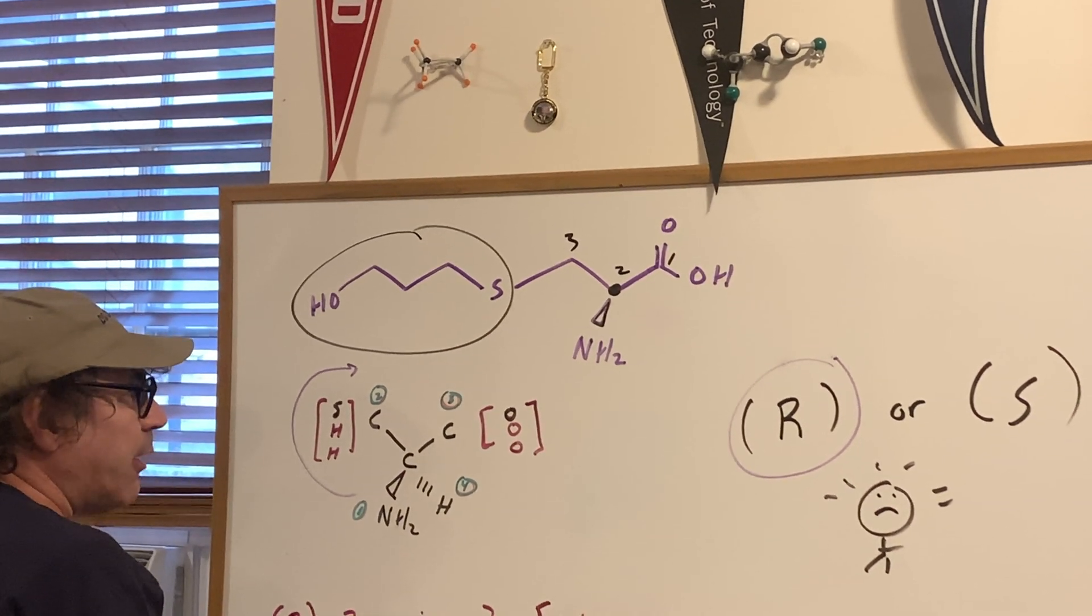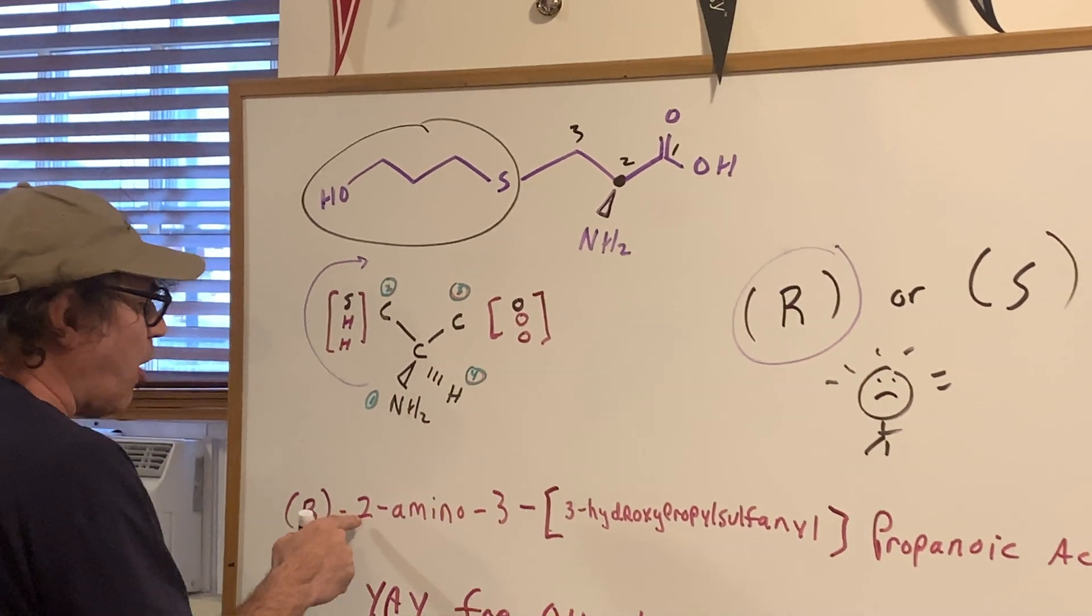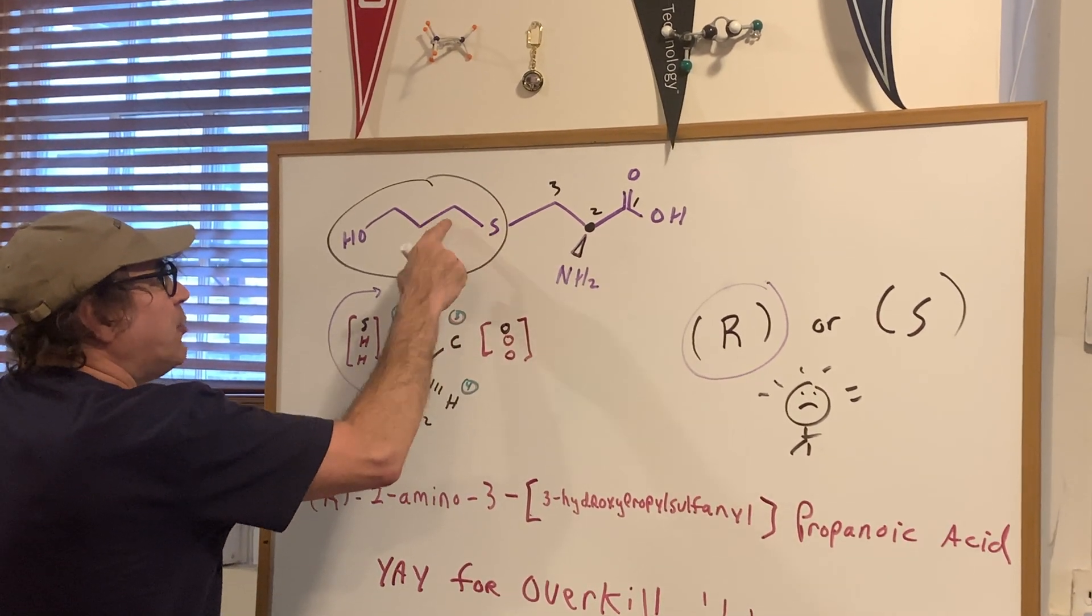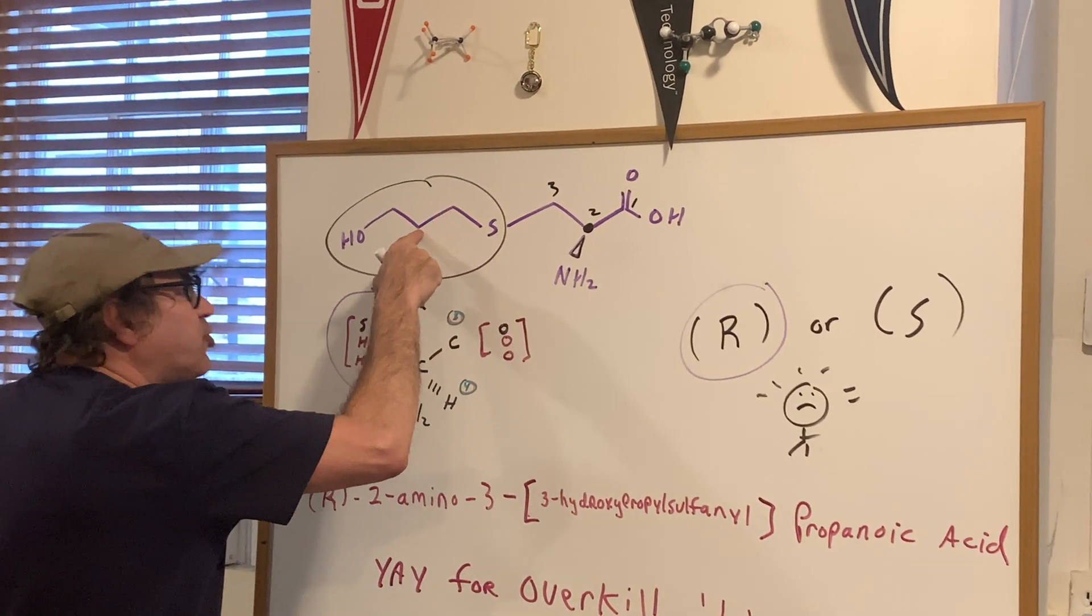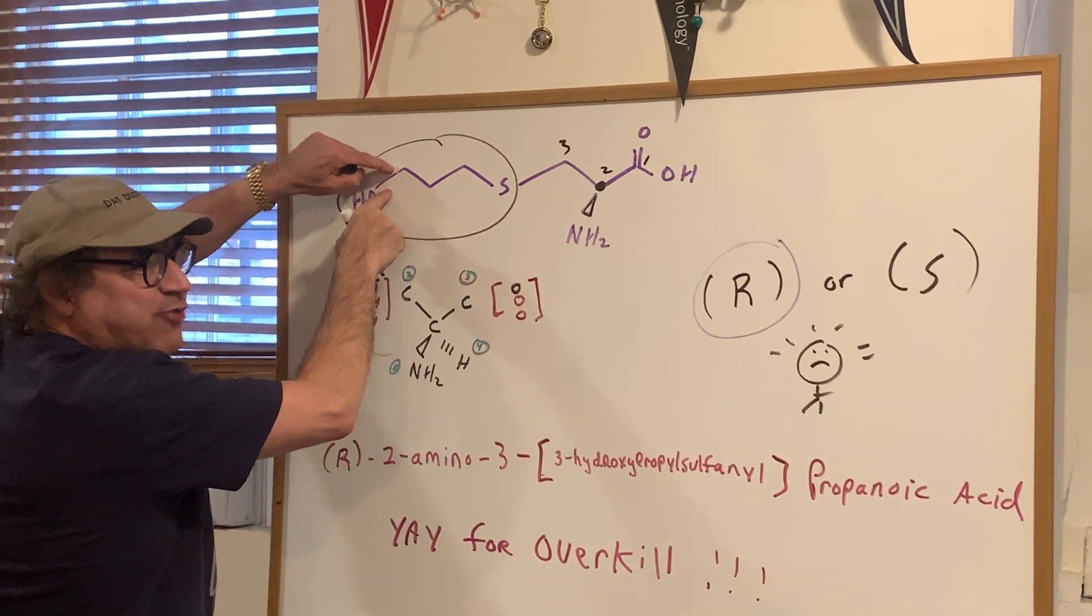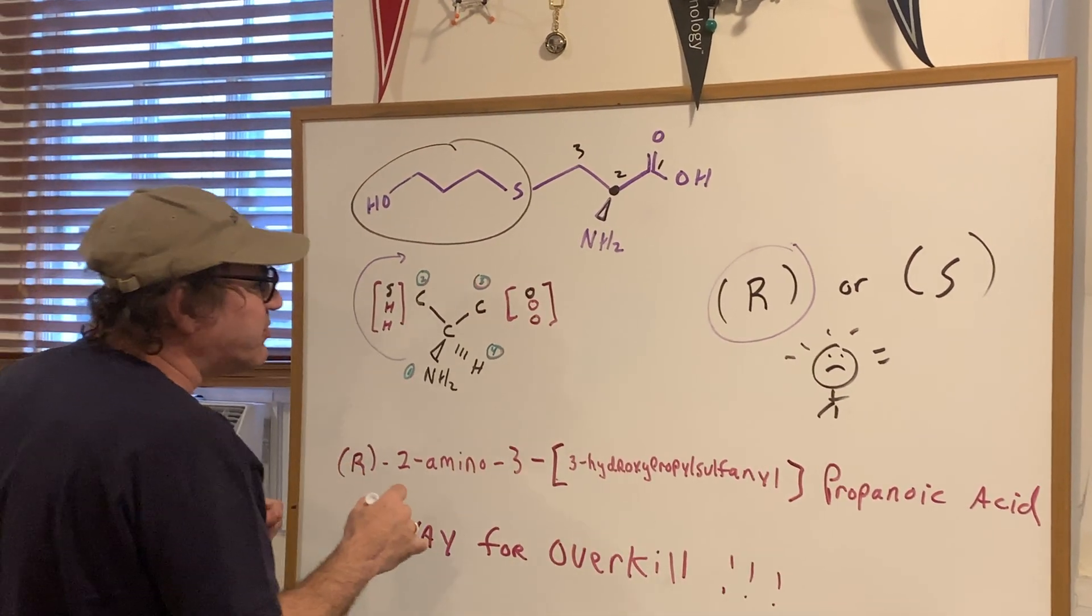what I would do is say R, because we found it was an R, 2-amino, and then this group, well, if you look at the number of carbons, one, two, three, it's propyl, and then off of the third position is a hydroxyl.